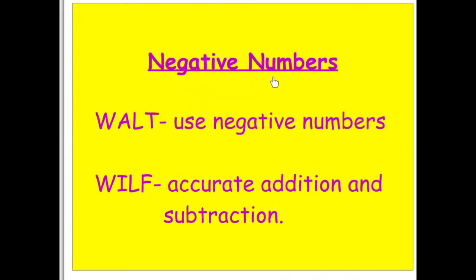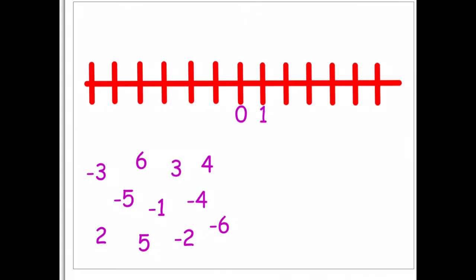This video will look at negative numbers. We're learning to use negative numbers, and what I'm looking for is for us to understand accurately how to add and subtract negative numbers. Here we have our number line, with lots of numbers arranged with zero right in the center. Going to the right of zero are all our positive numbers — your usual one, two, three, four.